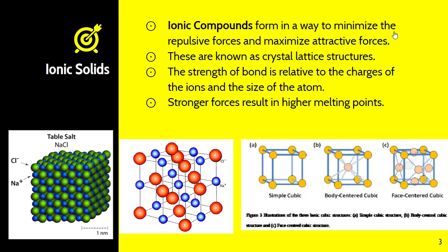So let's talk a little bit about ionic compounds. They form in a way that minimizes the repulsive forces and maximizes the attractive forces. As a result, they form what is known as a crystal lattice structure. They're evenly spaced out and they form these crystal-like structures. Now there are actually three different types of crystal structure, and this really depends on the type of ions that are present.